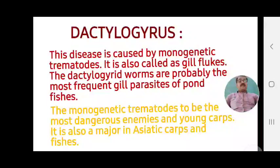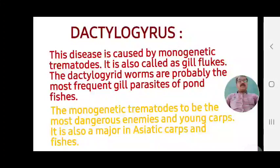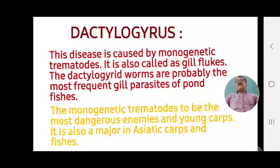Dactylogyrus is also called gill fluke. The dactylogyrid worms are probably the most frequent gill parasite of pond fishes, attacking abundantly on the gills. The monogenetic trematodes are the most dangerous enemies of young carps, and are also a major problem in Asiatic carps and fishes.